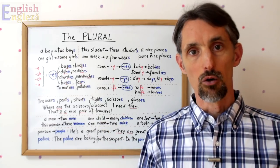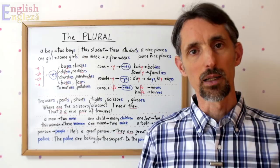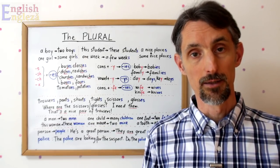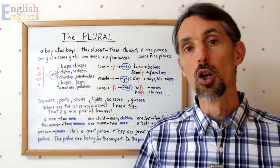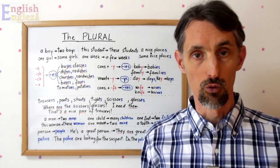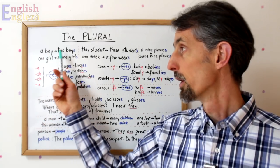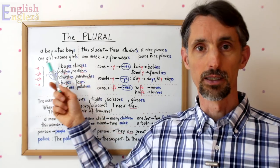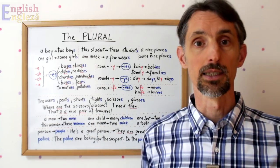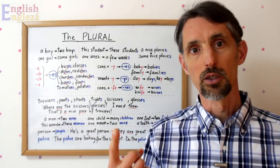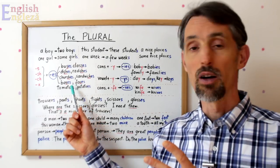Discutăm ce modificări suferă cuvintele pentru a denumi nu unul ci mai multe obiecte, ființe sau noțiuni. Ca o regulă, pluralul — și în engleză și în română — se formează adăugând anumite terminații substantivelor la singular. În engleză lucrurile sunt mai simple deoarece avem o singură terminație pentru plural, și anume S: boy/boys, girl/girls, place/places. Există însă și observații de pronunție — uneori acest S se pronunță Z.